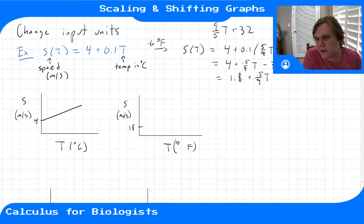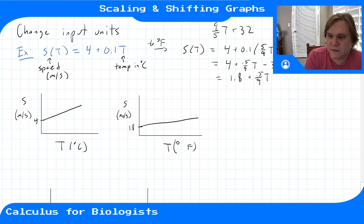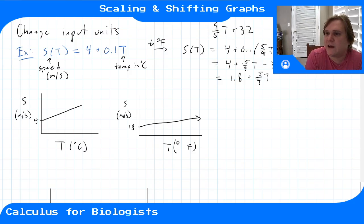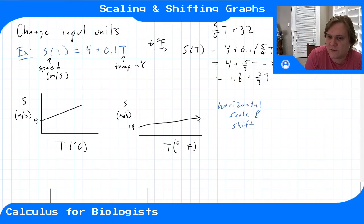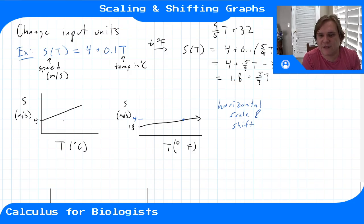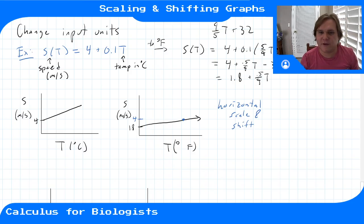The Fahrenheit scale is more spread out — water boils at around 212°F — so it spreads out the horizontal axis as well. Changing the input units with both a scaling and a shift gives us a horizontal scale and shift. With a line, a vertical shift and horizontal shift don't look very different, but with other types of functions it'll be more apparent. We'll do more complicated problems in section.